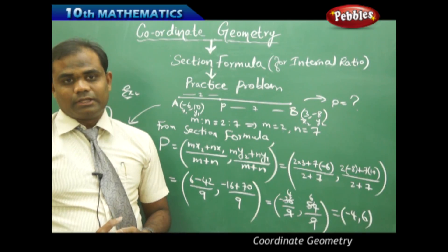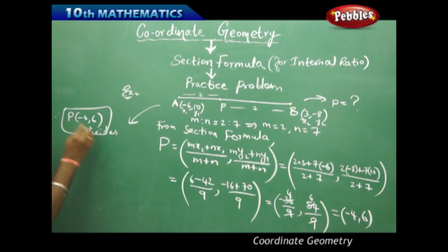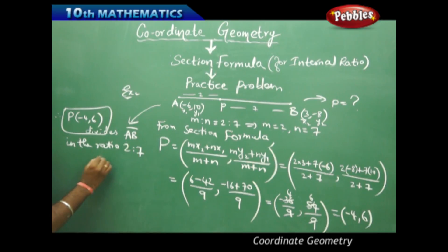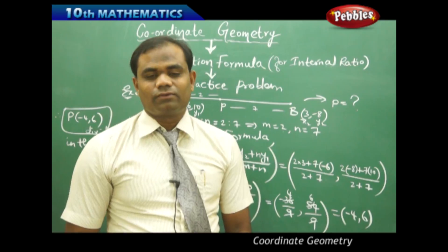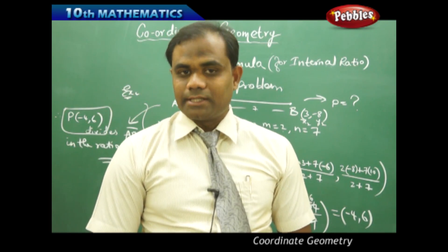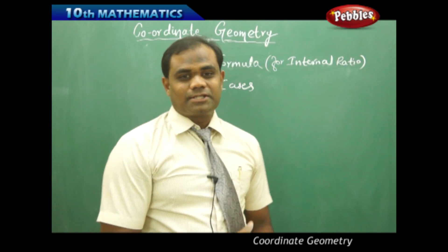Therefore P = (-4, 6). This is how we understand the concept of a point dividing a line internally in the ratio m:n. Now let's take the special cases where P divides AB in special ratios.